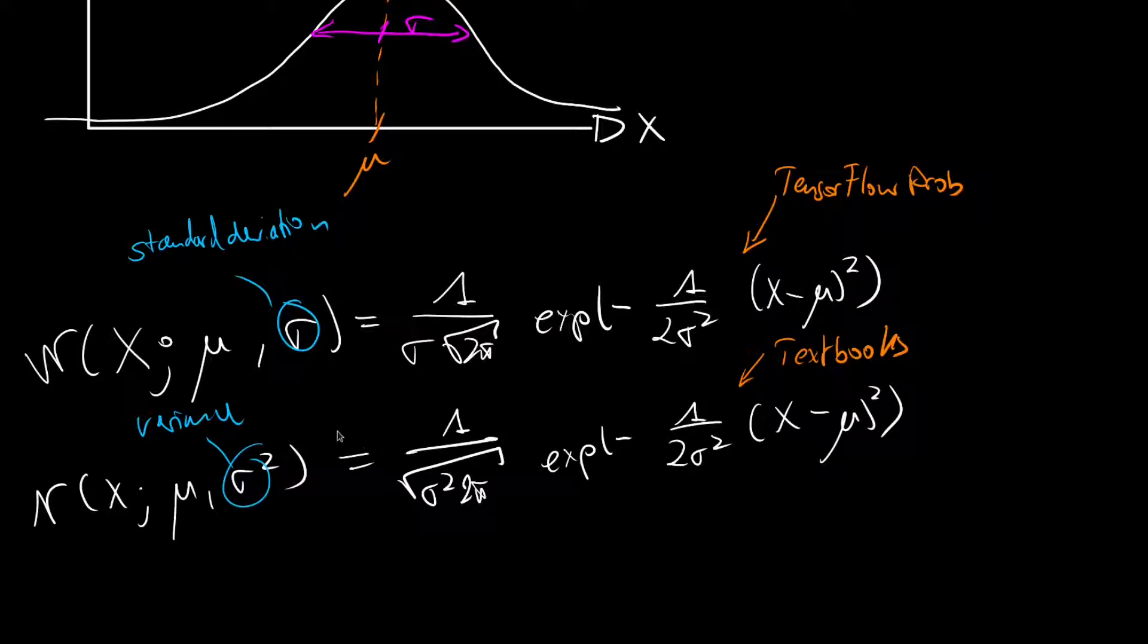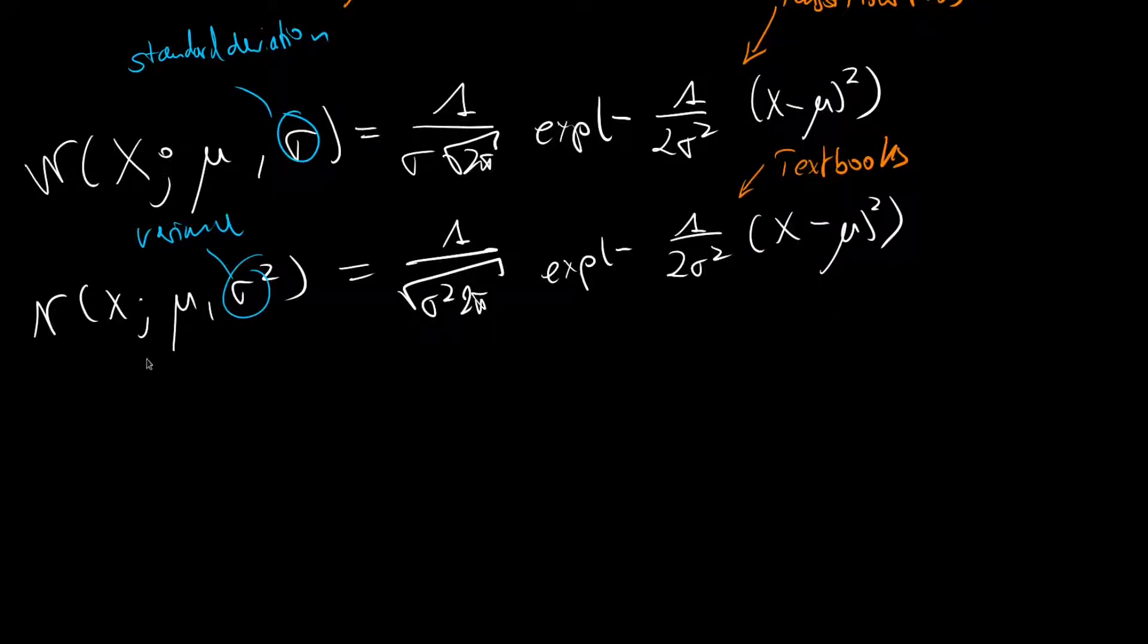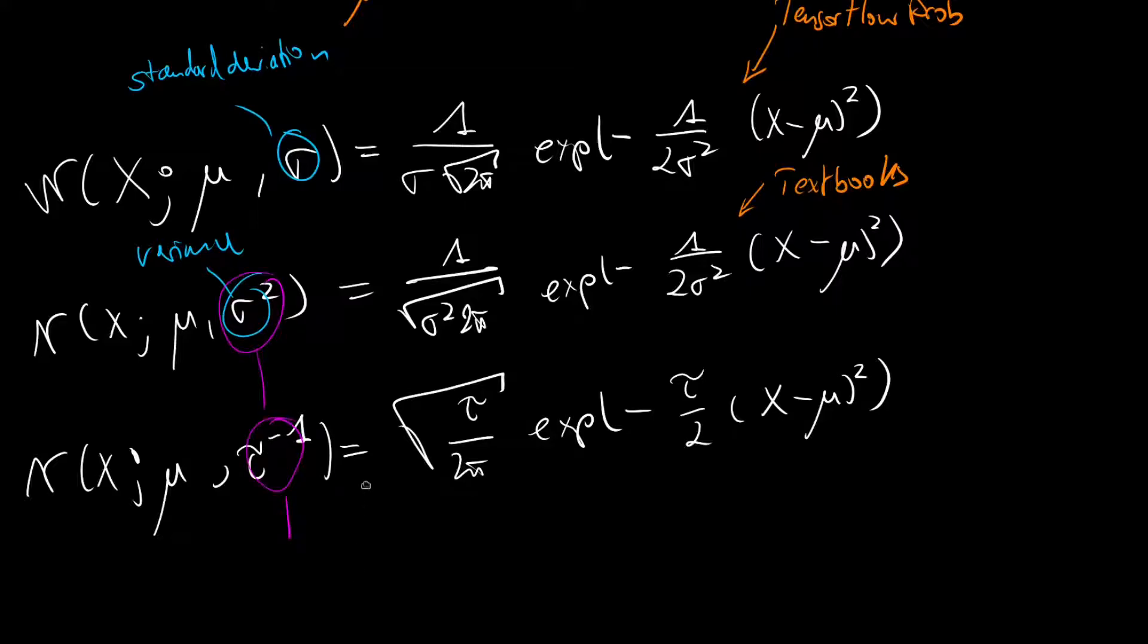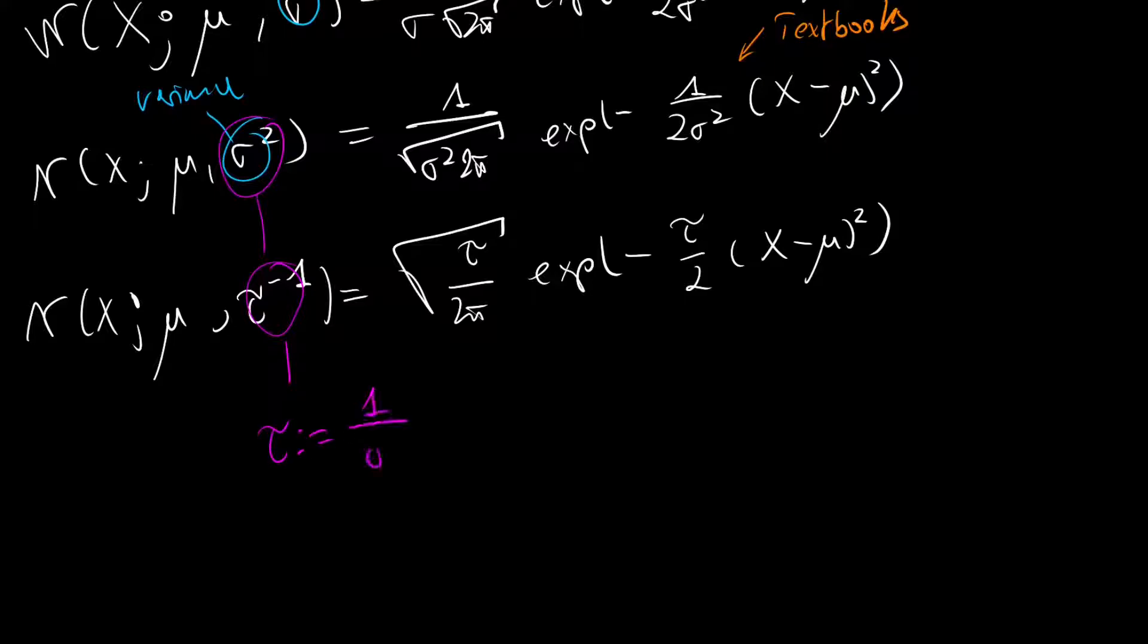Now let us introduce another parameterization of the normal distribution by the help of the precision. And the precision will be a replacement for the variance. We will define it as the normal over x with given mu, so our mean stays the same, and with a tau inverse. It is given as the square root of tau over 2 pi times the exponential of minus tau over 2 times x minus mu in brackets squared. Then we directly see the relation between the variance and the precision: the precision is just the inverse of the variance. So tau will be defined as 1 over sigma squared, and then it also makes sense that we define the normal with tau inverse in order to mimic the scheme that we have for the variance.